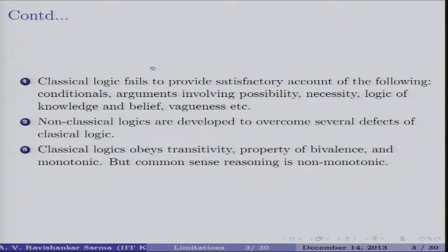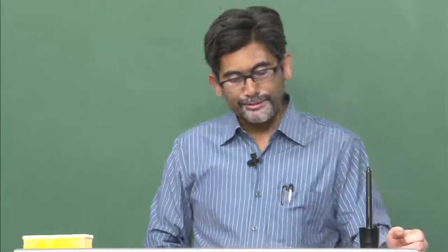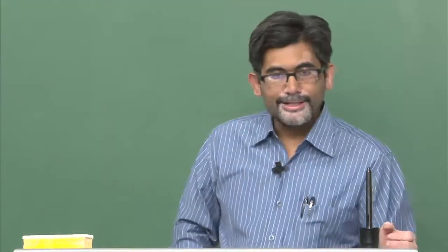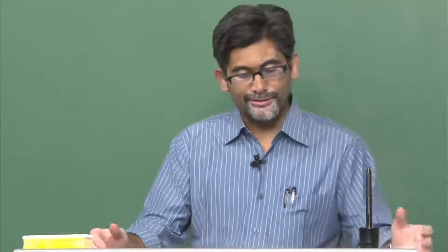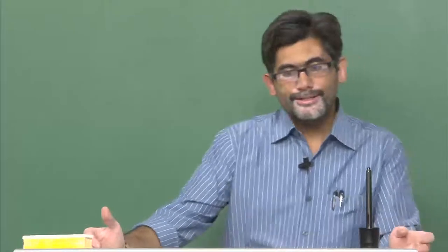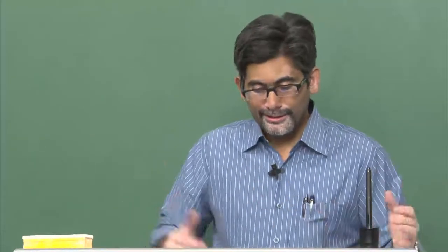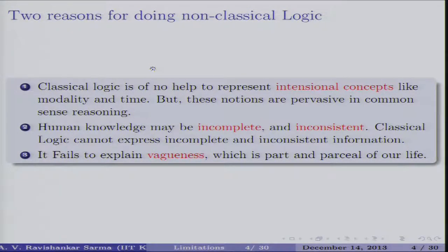Non-classical logics are developed to overcome the defects of classical logic. Classical logic is based on some fundamental laws, and to develop non-classical logics, you must withdraw at least one of these fundamental laws. Classical logic obeys transitivity, bivalence — only two values — and monotonicity, meaning even the addition of new premises will not lead to the withdrawal of a previously drawn conclusion. Classical logic will also have no help representing intentional concepts like modality and time; in this course, we focused on extensional concepts only.